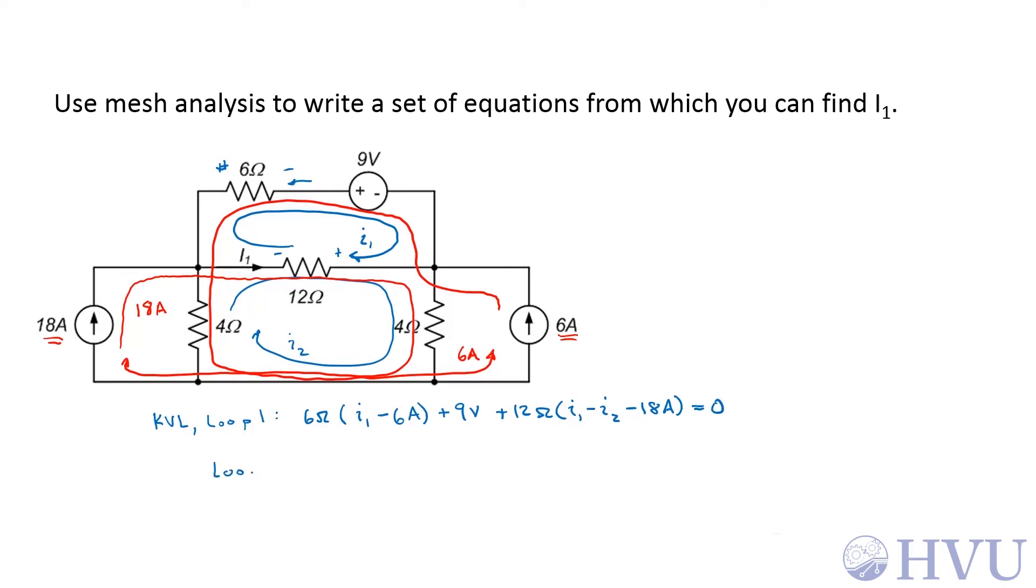Now for loop 2, I'll start down here. I have a 4-ohm resistor. I2 is going through that. As usual, I'm going to set up my sign convention so that the mesh current that I'm following enters the positive terminal. Then I also have a 6-amp constrained loop coming down this direction through that resistor, so that becomes minus 6-amps because that one's entering the negative voltage terminal.